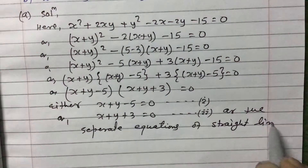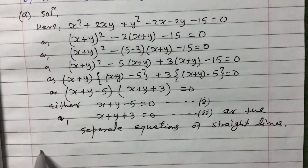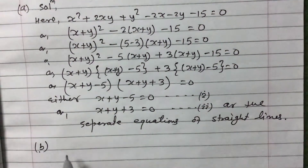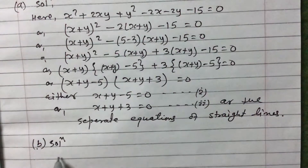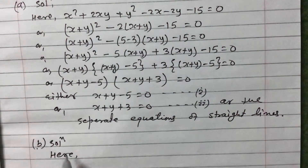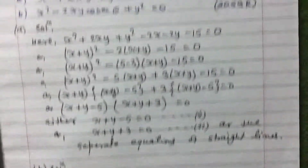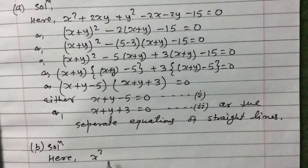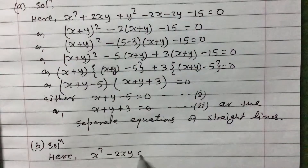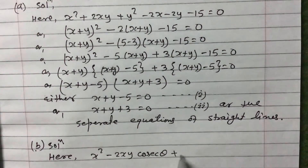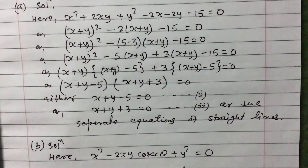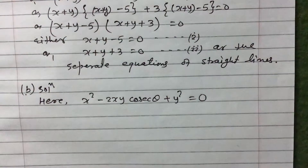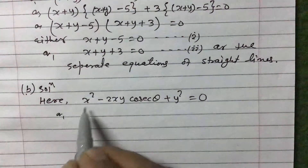These are the separate equations of the straight lines. Now for question B, the equation is x² - 2xy·cosθ + y² = 0. We will factorize this similarly.